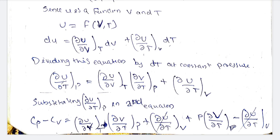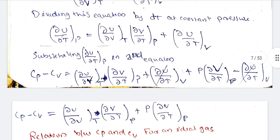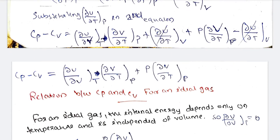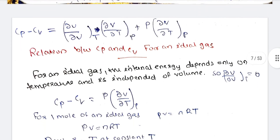Therefore, Cp minus Cv equals [(∂U/∂V) at constant T times (∂V/∂T) at constant P] plus P times (∂V/∂T) at constant P. This is the general relation for Cp minus Cv.